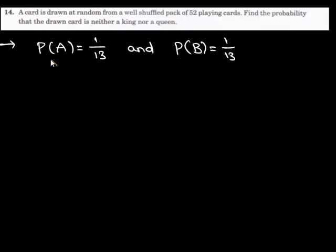We have the probability of king and probability of queen is 1 upon 13. In this question, we have to find out the probability of a card not getting a king nor a queen.